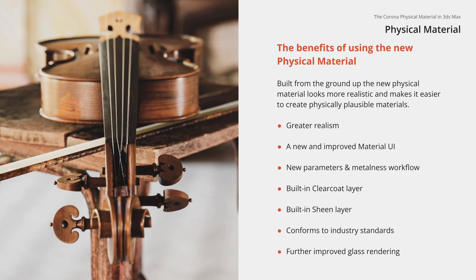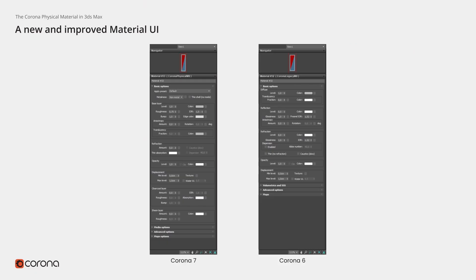Before we jump into 3ds Max, let's take a moment to go over the UI. On the left you'll see the physical material's UI, and on the right the legacy material's UI. Yes — the material you've used for the last couple of years is now called the Corona legacy material. As far as the differences go, let's start by highlighting that with the new physical material you have a group called the base layer. The idea behind the base layer is that it contains all of those basic properties a base layer of the material would have.